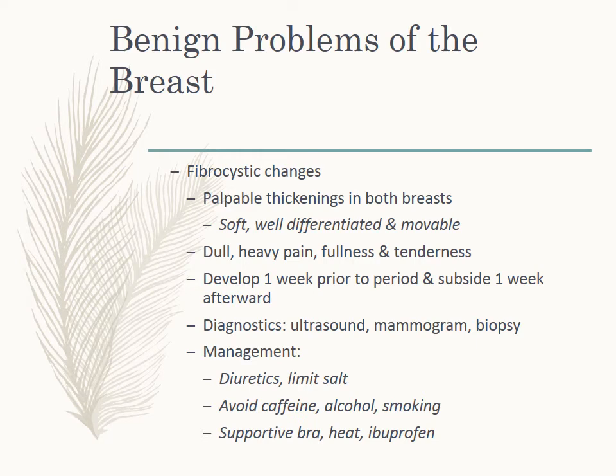Benign problems of the breast: fibrocystic changes present as palpable thickenings in both breasts that are soft, well-differentiated, and movable. Women experience dull heavy pain, fullness, and tenderness — it can develop one week prior to their period and go away about one week afterwards. Mammogram and ultrasound are done, and if something warrants it, a biopsy is performed. Treatment includes diuretics, limiting salt and caffeine, alcohol cessation, smoking cessation, wearing a supportive bra, and heat and ibuprofen to relieve symptoms. Only about 5% of fibrocystic conditions have changes that indicate a risk factor for breast cancer.